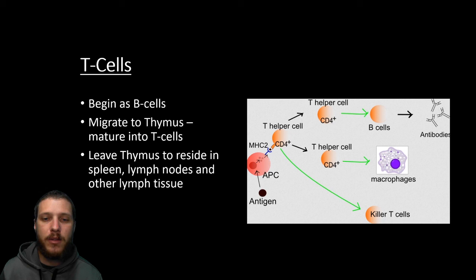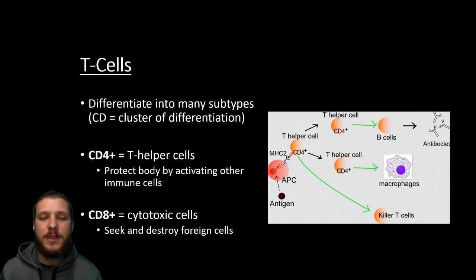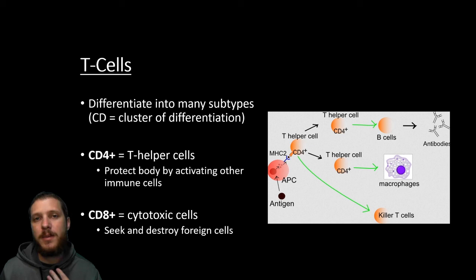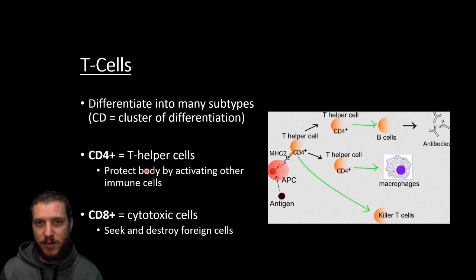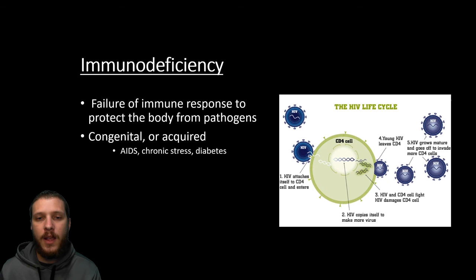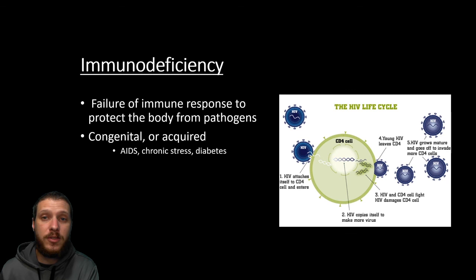T cells begin as stem cells in the bone marrow, go to the thymus, and mature into T cells. As they leave the thymus, they reside in the spleen, lymph nodes, and other lymph tissue. T cells are widely known because of their involvement with HIV — the virus attacks T cells, and when T cell levels drop too low, the immune system tanks, leading to AIDS because the immune system can't fight opportunistic diseases. T cell levels are always monitored. If there are problems with the immune system — whether congenital, acquired through HIV/AIDS, chronic stress, or diabetes — this is called immune deficiency: a failure of the immune response to protect the body against pathogens.